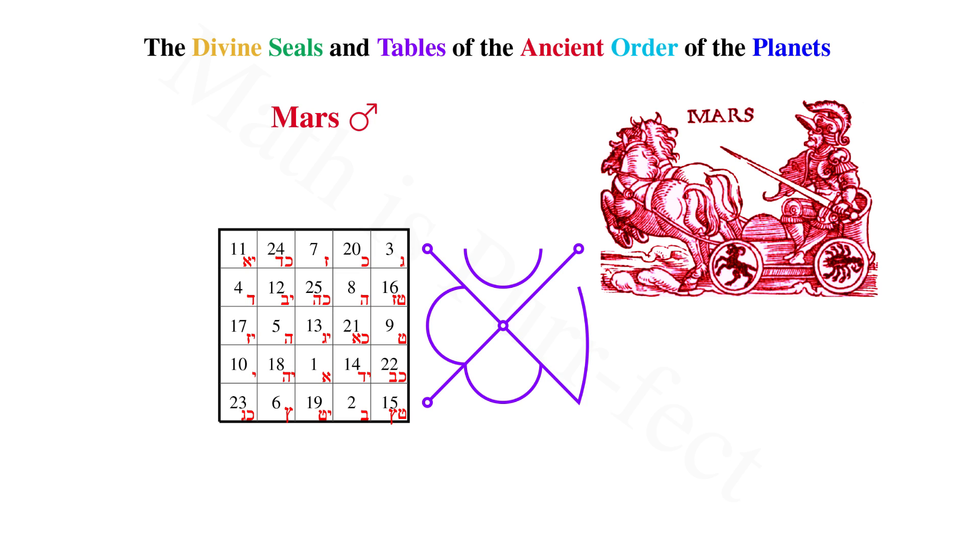But what and how is this used in sigil creation? This time I promised to show you, but I'm going to use the sigil for the spirit of Mars to do so. This spirit is called Bartzabal. I've written this name in Hebrew to show how this works.